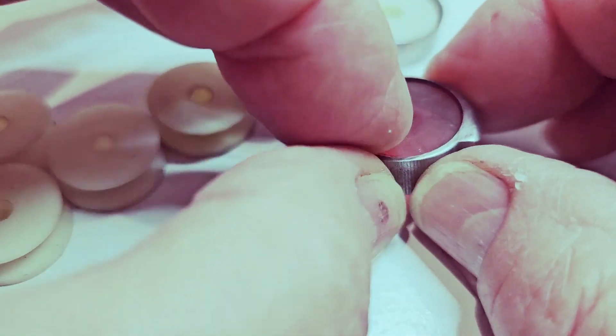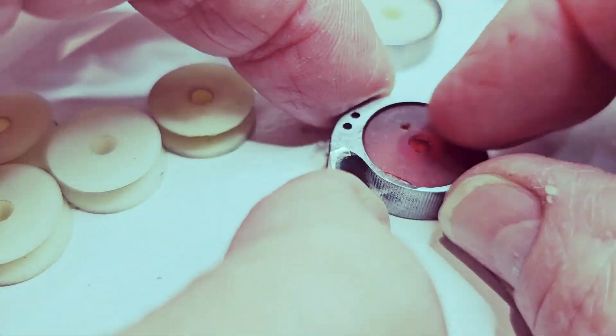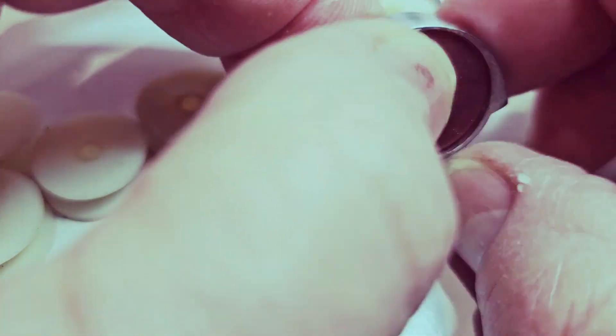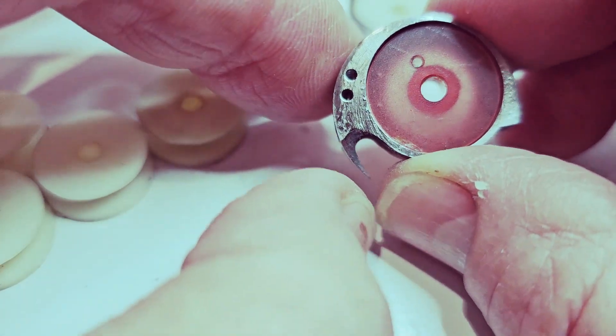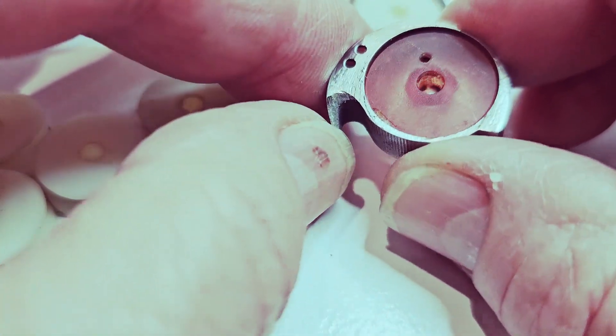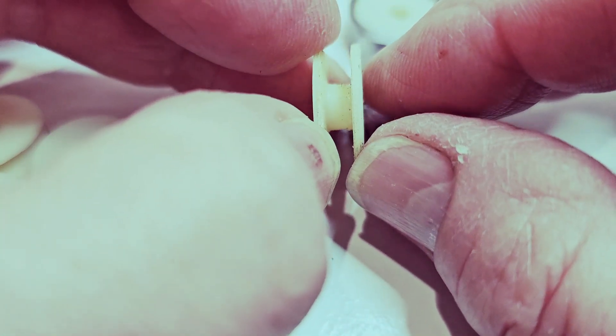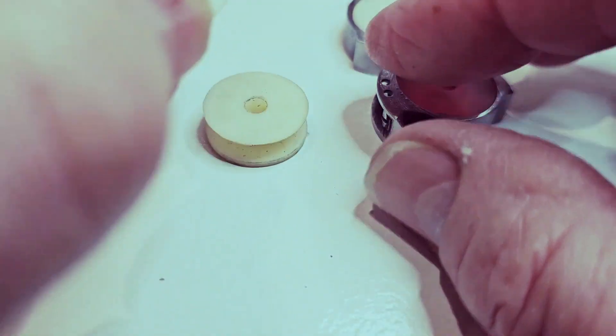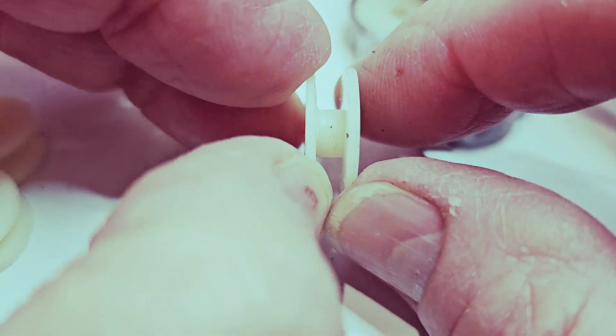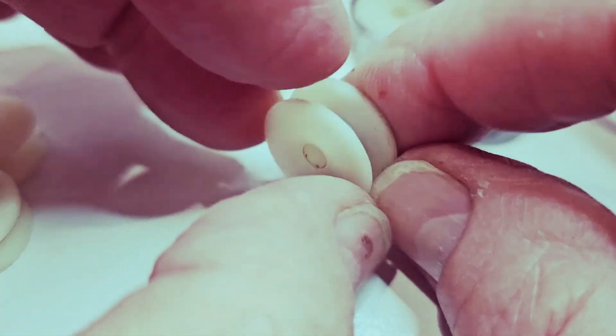When you make these, you have to make sure they're not too high. These are made on an SLA printer. You cannot make these on an FDM printer because you just can't get these nice clean walls here.